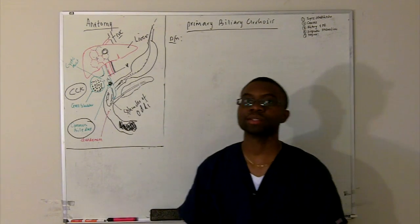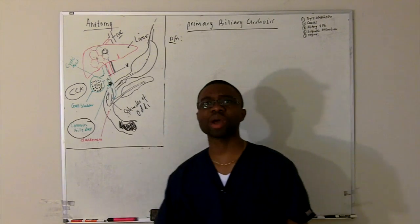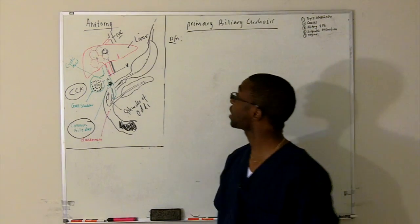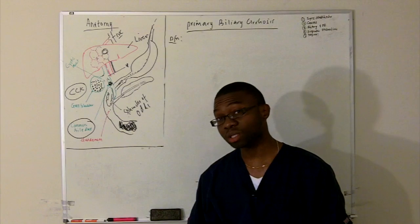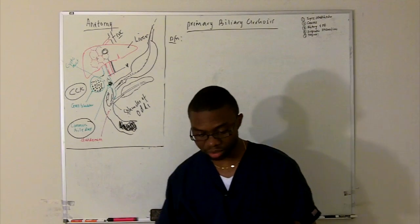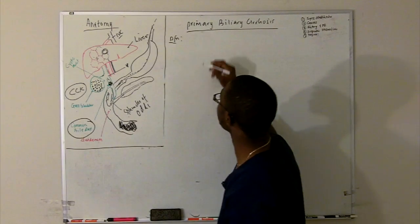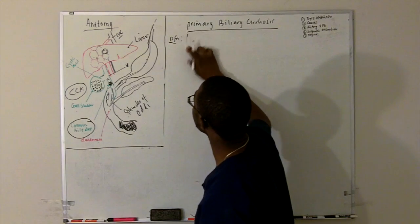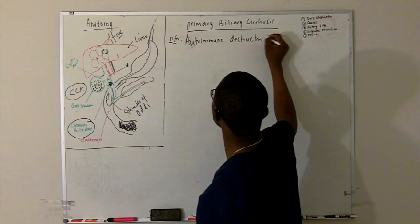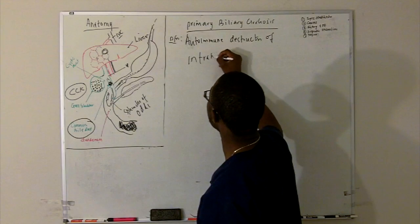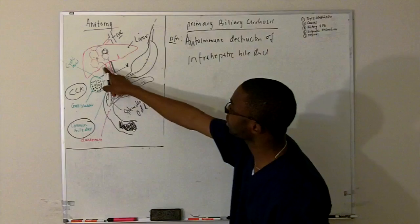The next topic we're going to talk about is primary biliary cirrhosis. This is a chronic progressive cholestatic liver disease caused by autoimmune destruction. Primary means we don't really know what's causing it — there are no secondary causes. The most important part of the definition is that this is an autoimmune destruction of the intrahepatic bile ducts.